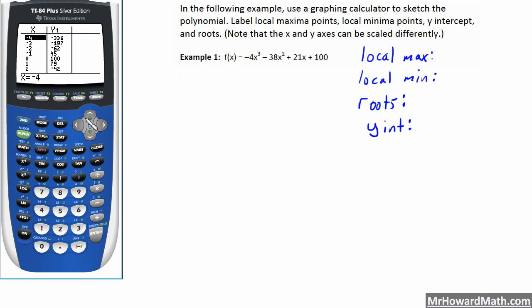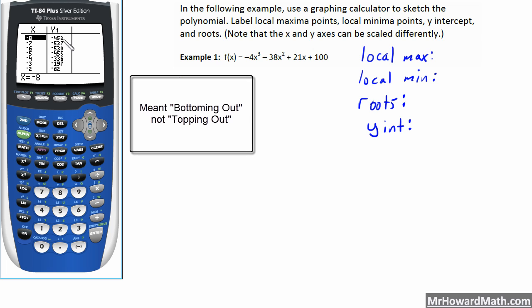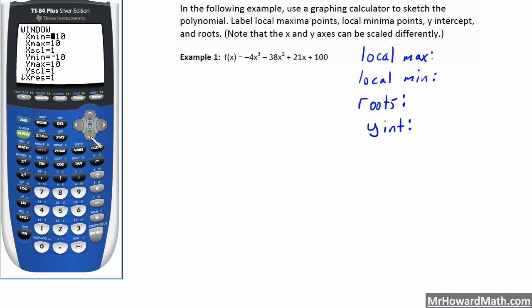So we know the local minimum, setting the window is the key here. And so we know the local minimum is somewhere in between negative 1 and negative 10 on the x-axis. So we can go on our table to help us find the proper y-minimum value to set for our window. So let's go on our table. And we see a y-value of negative 336, negative 455, negative 537. So it's topping out somewhere in between negative 6 and negative 8. So let's try a y-minimum value of, say, negative 600.